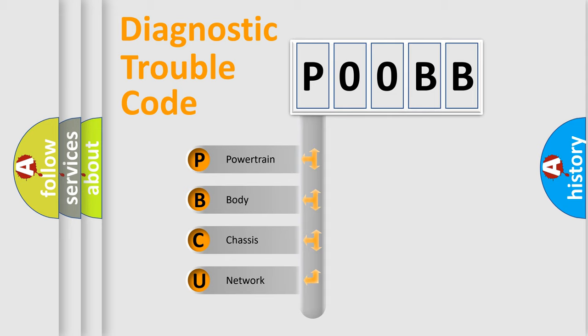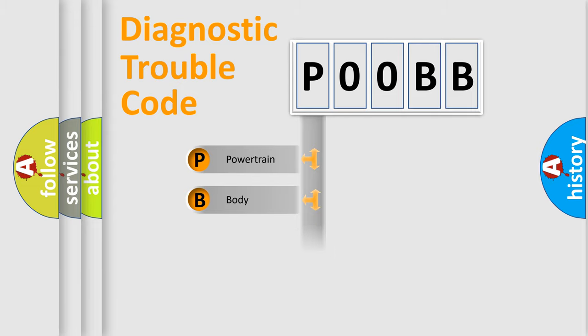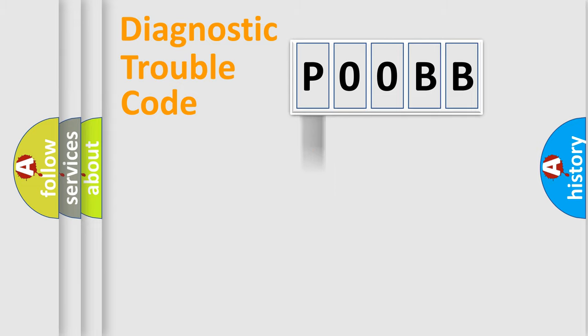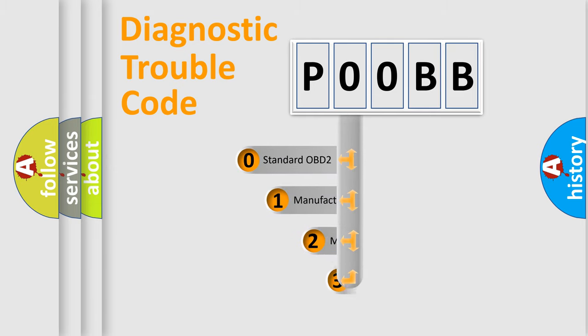We divide the electrical system of an automobile into four basic units: Powertrain, body, chassis, and network. This distribution is defined in the first character of the code.